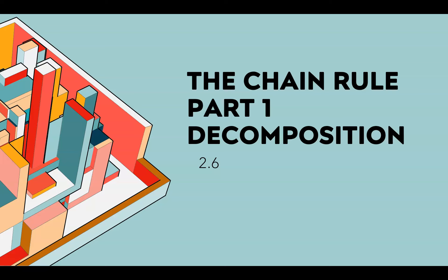Unit 2, Lesson 6 is the chain rule. The chain rule is used when you have one function as the input to another function and you don't want to multiply everything out, or you can't. Part one — I'm going to split this into two parts — is doing the chain rule the long way, showing decomposition.